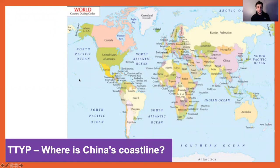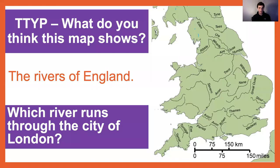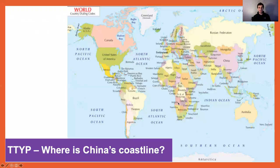In our last lesson, we spoke about coastlines. We spoke about the UK as having a coastline all the way around it — if we go back to here, you can see there's a coastline all the way around where there would be beaches and such features, all the way around the United Kingdom.